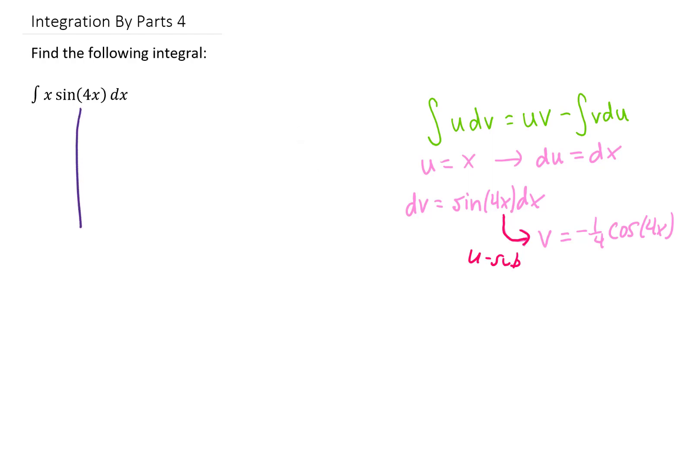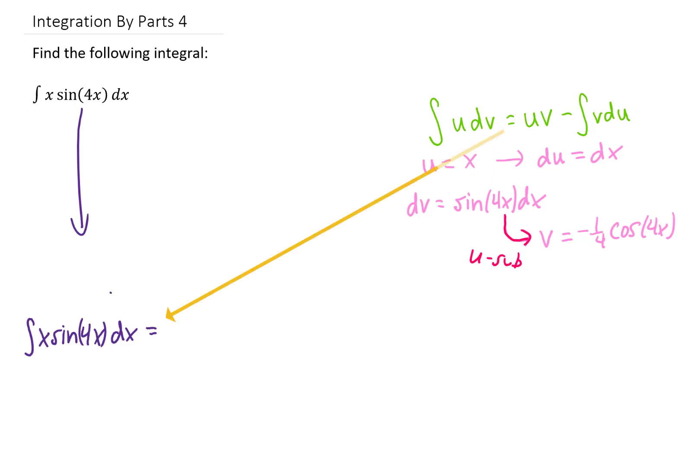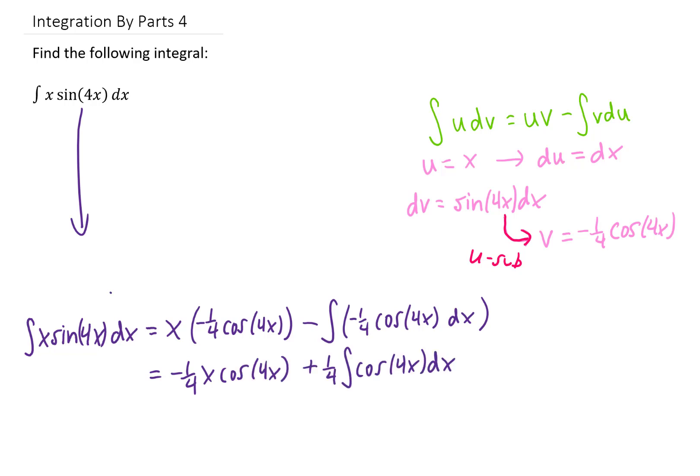But as for this problem, we're going to rewrite this integral and use this integration by parts formula to do it. The formula says we need to multiply u times v. That's going to be x times negative 1 fourth cosine 4x. We need to subtract the integral of v du, and we're left with this line. A little bit of simplification, just bringing the constants out in front, gives us this line right here.